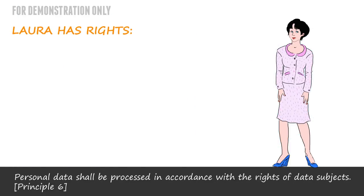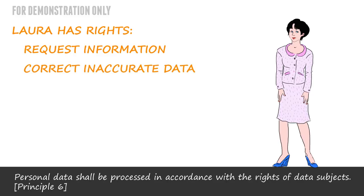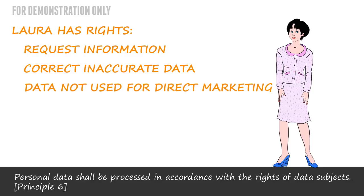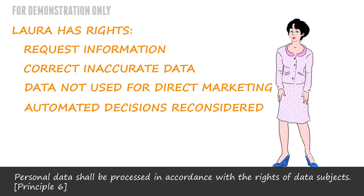Laura, as a data subject, has certain rights. She can write to a firm and request to see the information held about her — she'll have to pay a small fee. If any of her data is inaccurate, she can ask for it to be corrected. She can prevent her data from being used for direct marketing, and she has rights about decisions which are made by automated means. For example, if she applied for a loan and the decision was made purely by automated means with no human intervention, then she could ask for this decision to be reconsidered.